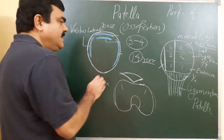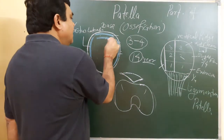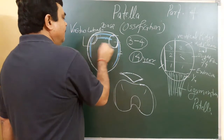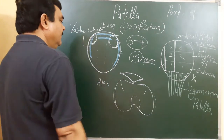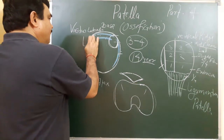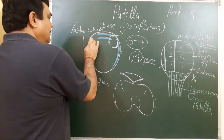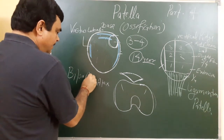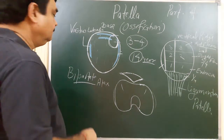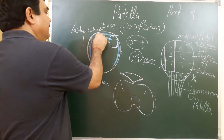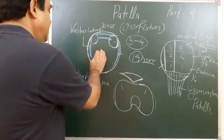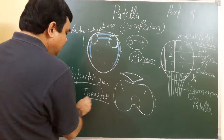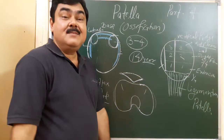Sometimes there is non-union, non-fusion of some centers. If one center does not fuse with the rest of the patella, this is known as bipartite patella. If two centers do not fuse with the rest of the patella, then it is tripartite. So this is all about the ossification.